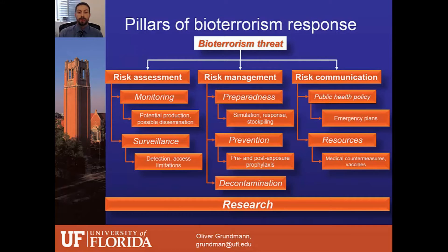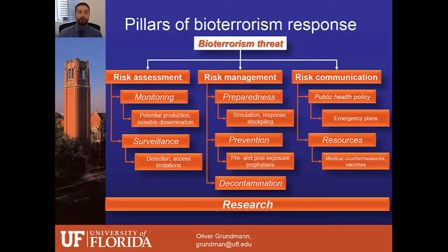The pillars of bioterrorism response in regards to a potential bioterrorism threat can be categorized into three broad categories, all explored in the review. The first one is risk assessment, which includes monitoring and surveillance. Monitoring here refers to the potential production and possible dissemination — the most common and most risk-associated pathway of dissemination would be through the air.